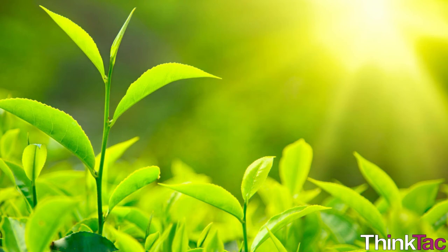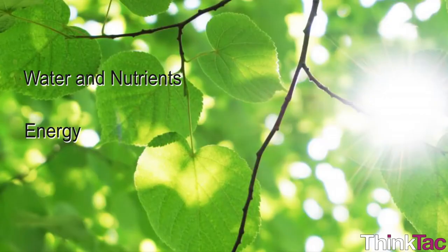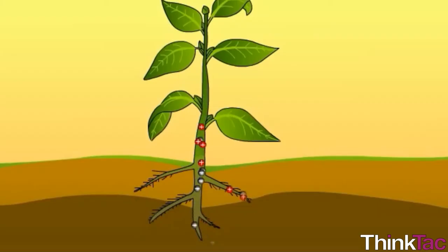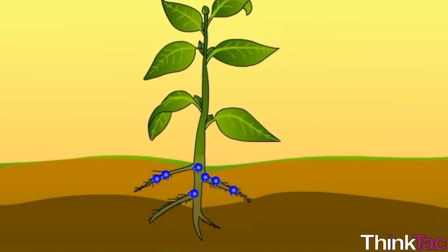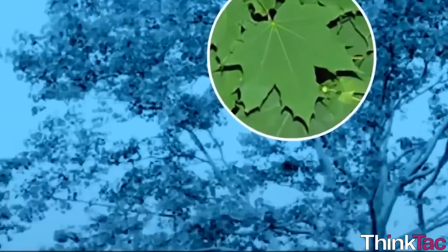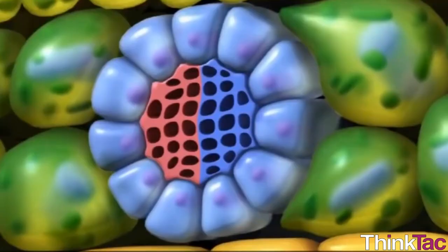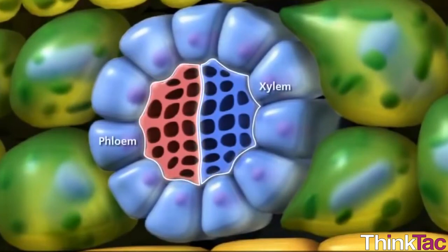The primary function of leaves is photosynthesis, that is to make food for the plants by using sunlight. For this purpose leaves need nutrients, water, and energy. While the energy for this process is provided by sunlight, the requirement of water and nutrients is fulfilled by the veins. Plants have different structures that serve different functions. The roots of plants absorb water and nutrients from soil and move it towards the leaves. The leaves make food for the plant from these nutrients and water and send it to different parts of the plant. Veins in the leaves are responsible for this transport. Xylem cells in the veins bring water and nutrients to the leaf, and phloem cells of the veins take food from the leaf and distribute it to other parts of the plant.